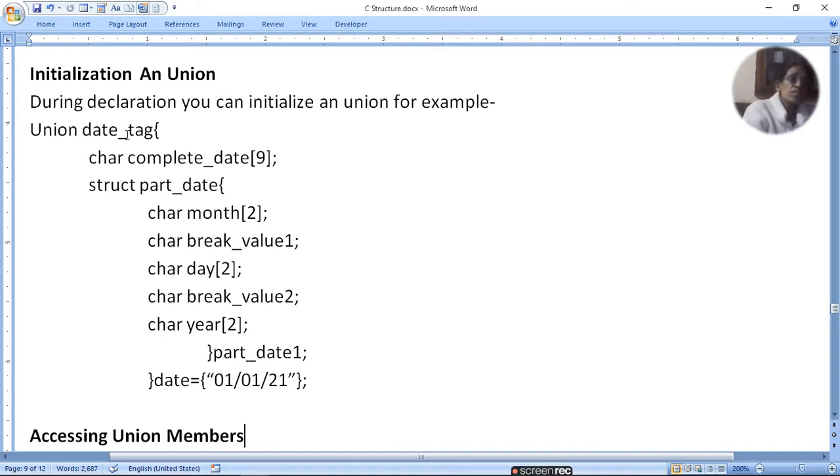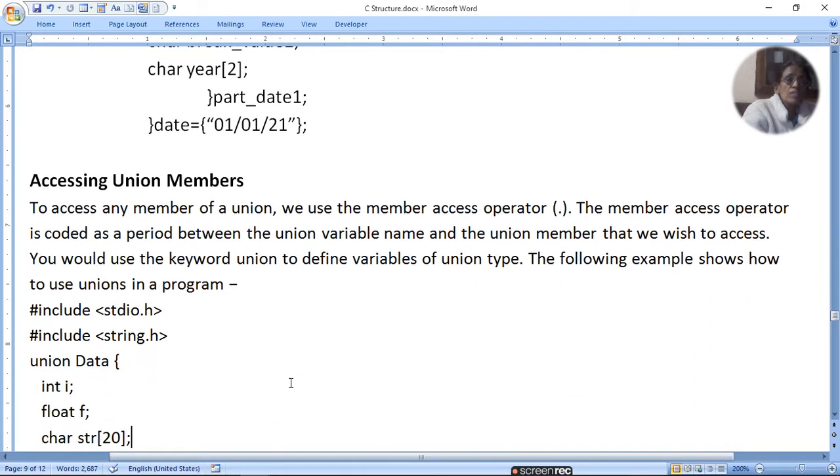Now how can we initialize data? We made union data tag. If we want to store a date, we can put a complete date or store part of the date. First character month is 0-1, break value slash, day is 0-1, break value slash, year is 2-1. The slash is used for month, day, and year. We have made everything in character form because the total date includes the slash, which is also character type. So everything will be stored in character type. This is how values are initialized.